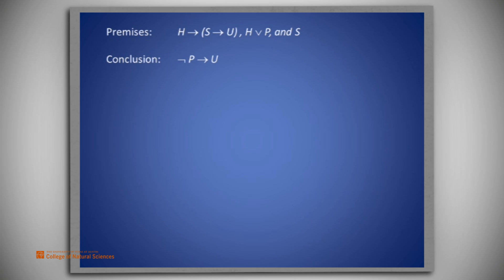So, suppose we did have the premise not P. We see from the second premise that we would be able to conclude H using disjunctive syllogism.